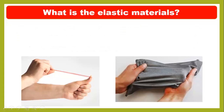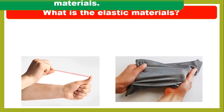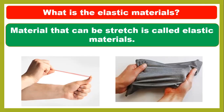Today we are going to learn about elastic materials. What are elastic materials? As you can see, the two pictures show us materials that can be stretched, like this rubber band. And look at this cloth piece — it can be stretched too. So these materials are elastic materials because they are soft. A material that can be stretched is called an elastic material.